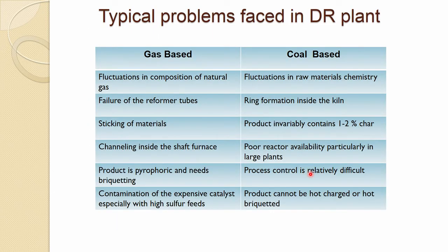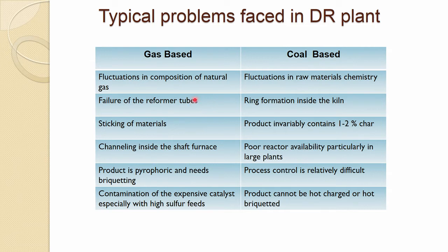Typical problems faced in DR plants: in gas-based processes there is fluctuation in composition of natural gas, which makes it difficult to maintain the right composition always. One has to be quite careful and keep on checking the composition. Failure of reformer tubes is also quite a common problem in gas-based reformer units.